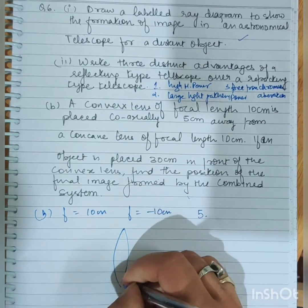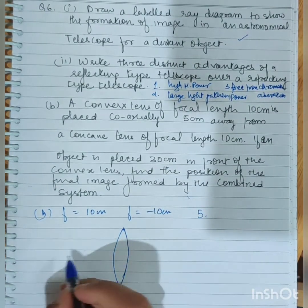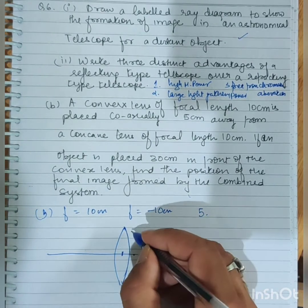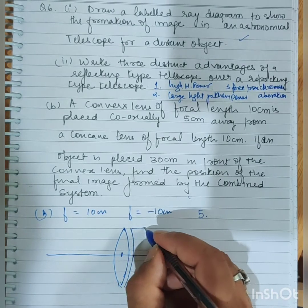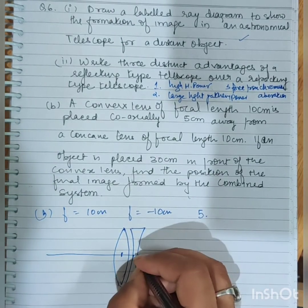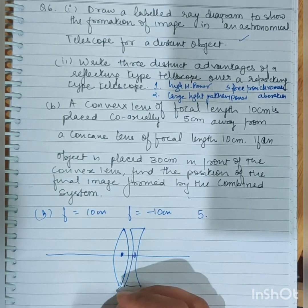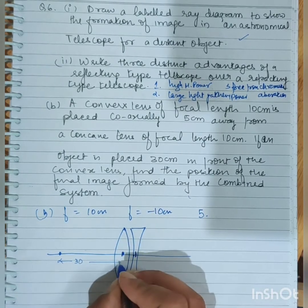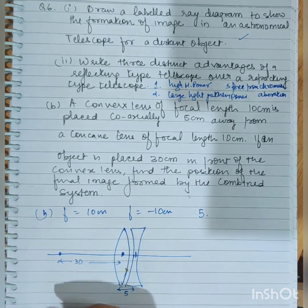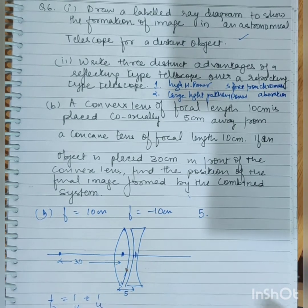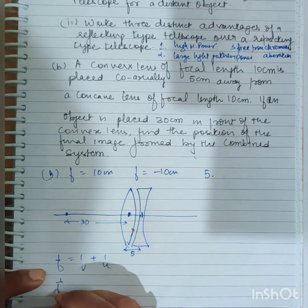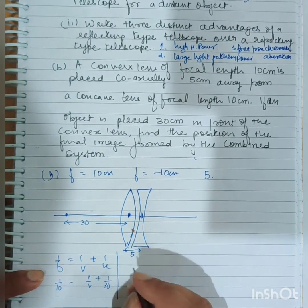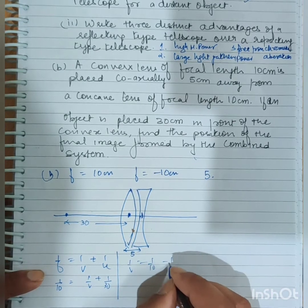So this is your first lens, the convex lens. 1 by V plus 1 by U equals 1 by f. So 1 by V is 1 by 10 minus 1 by 30.